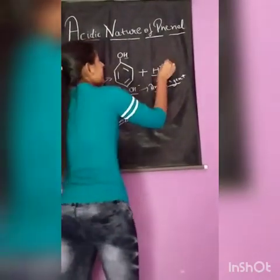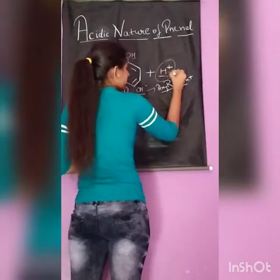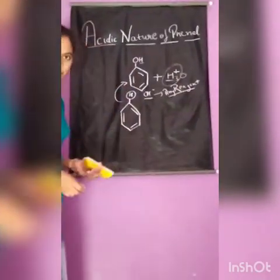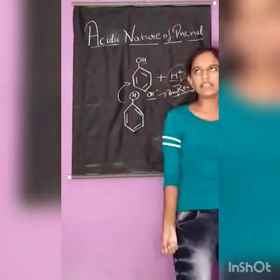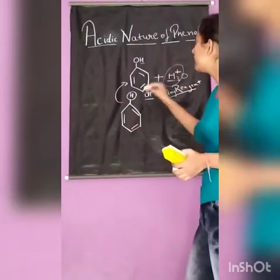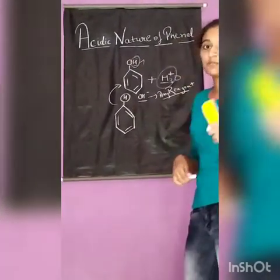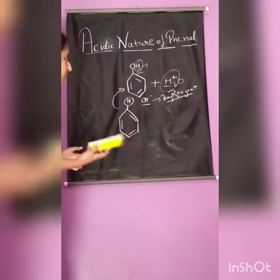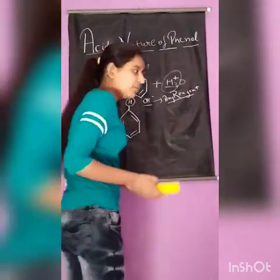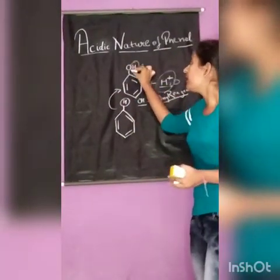The hydroxide ion gets attached and the hydronium ion — or we can say the proton, or H3O positive when taking the example of water — is released. The acidic nature refers to the removal of this H-positive atom from the phenol ring. The acidic nature of phenol is due to the resonance stabilization of the phenoxide ion formed by the removal of the hydroxide ion.